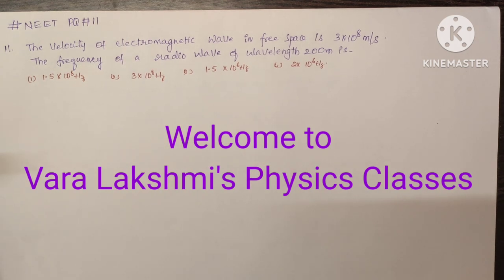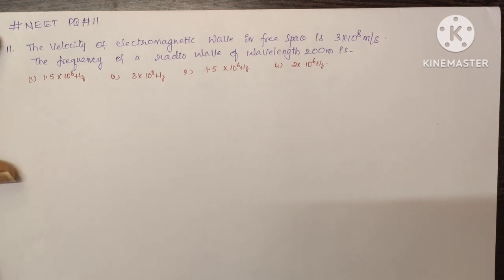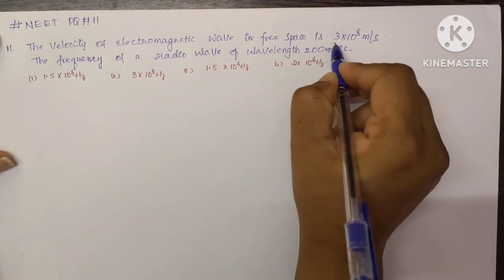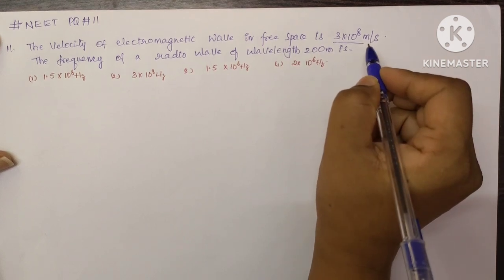Hi friends, welcome back to Lakshmi's Physics Classes. In this video, let's see the NEET practice question number 11. The velocity of electromagnetic waves in free space is 3×10⁸ meters per second.